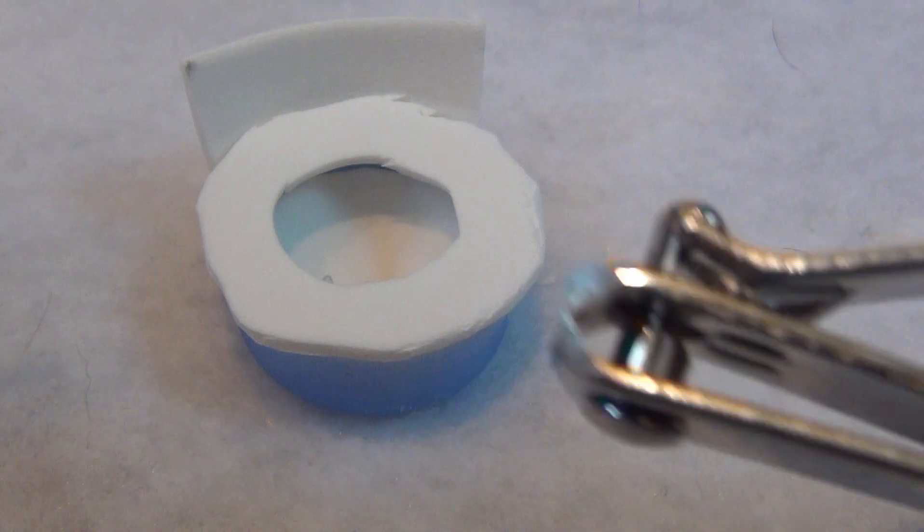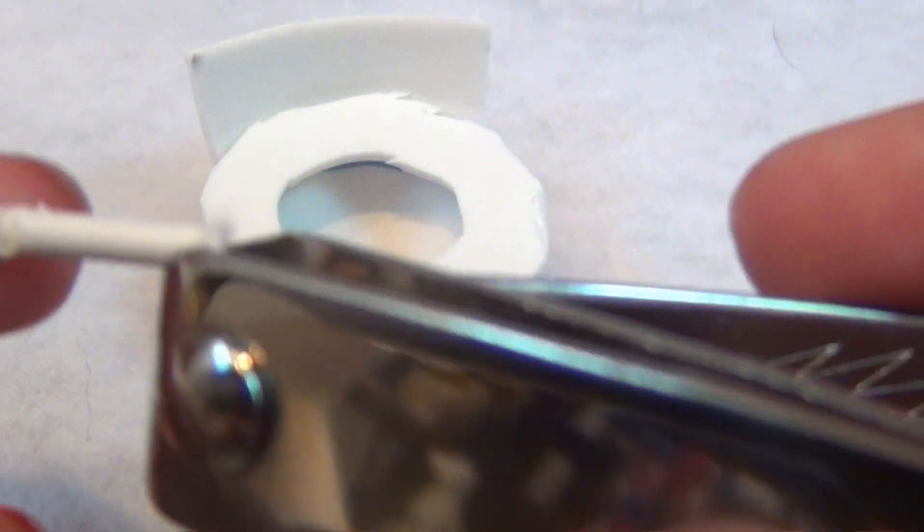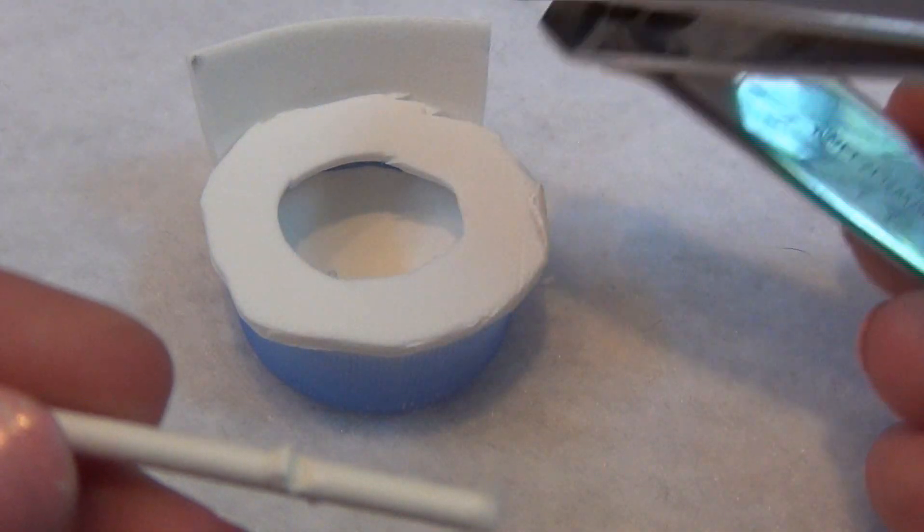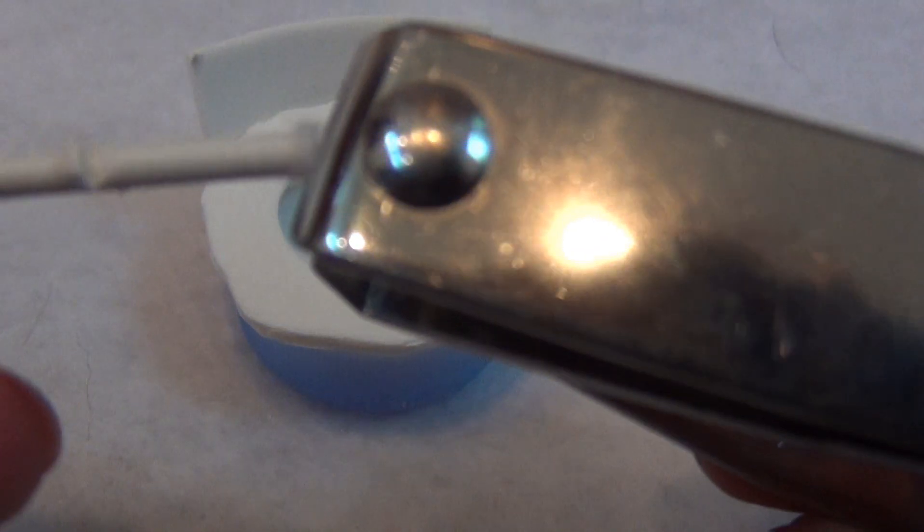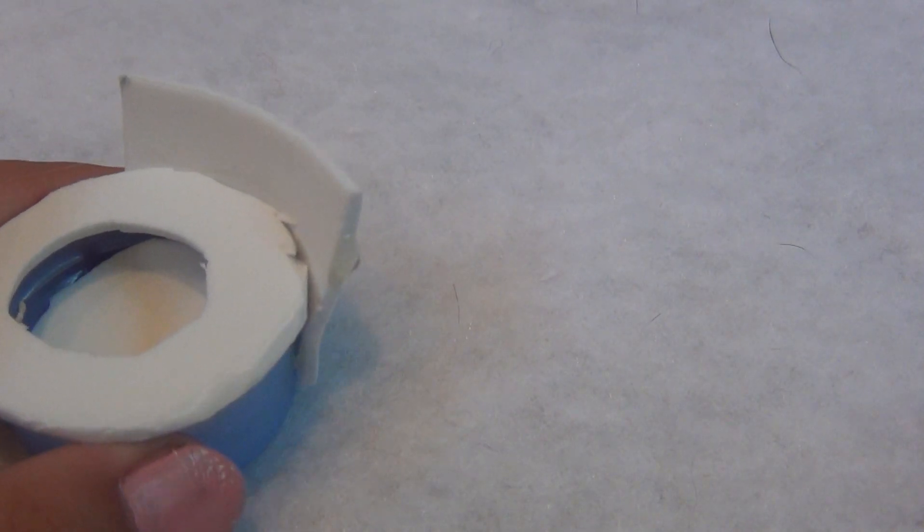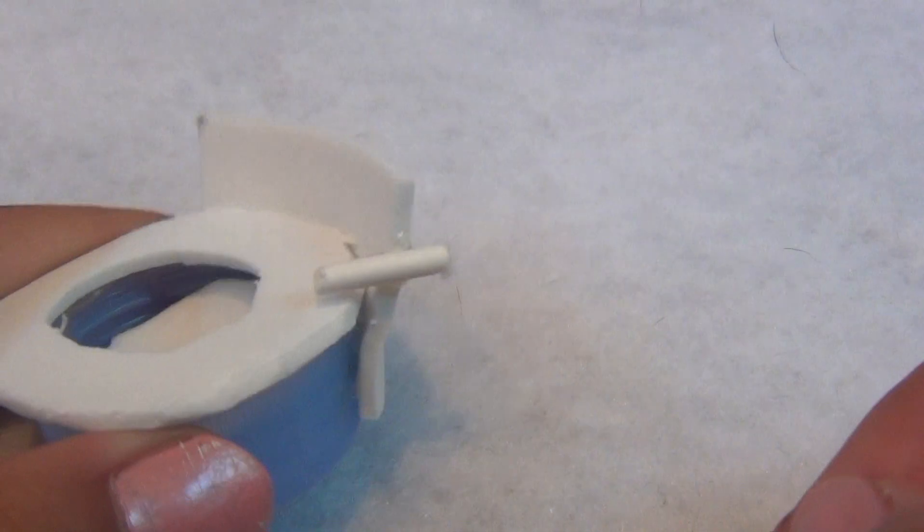Now, using some nail clippers, snip off a small piece of your cotton swab, which will be used as the flush on the toilet. Glue the flush to the side of your toilet.